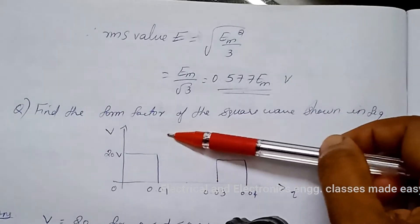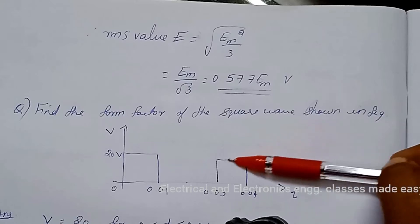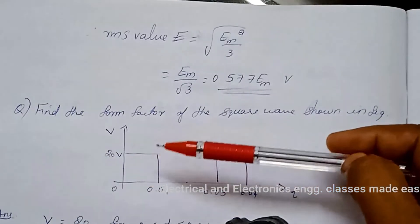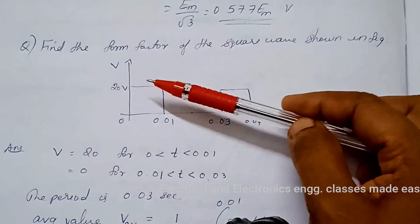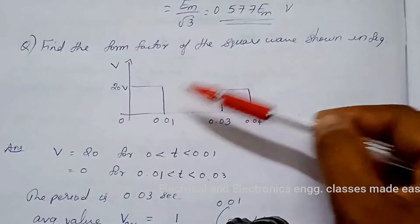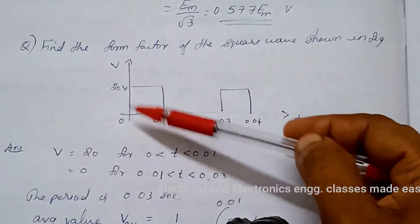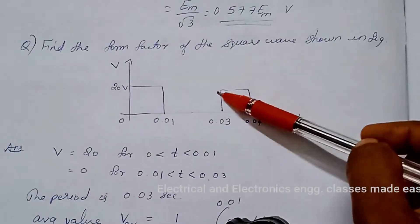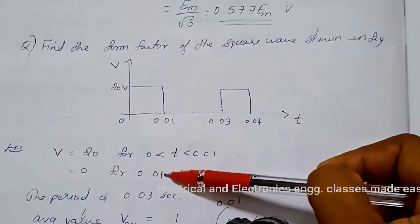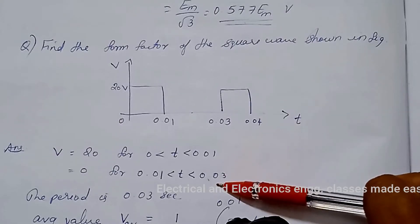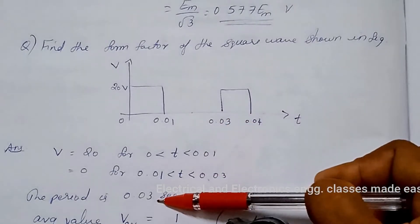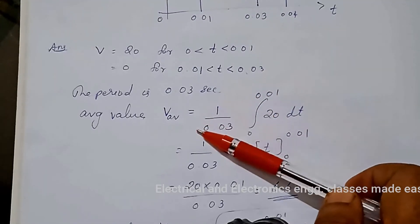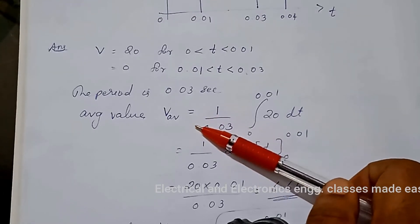Let us do another problem. Find the form factor of the square wave shown in the figure. The square wave has a constant value for a particular time. We can write: v equals 20 for 0 to 0.01, and v equals 0 for 0.01 to 0.03. So the period is 0.03 seconds.